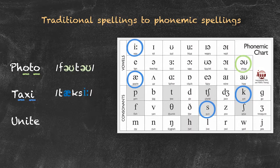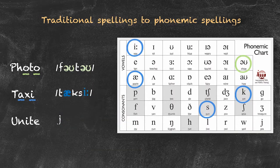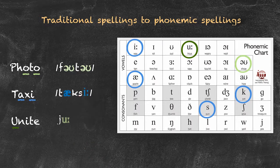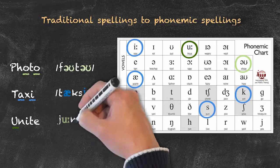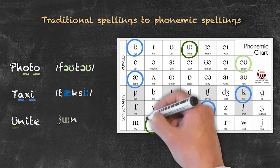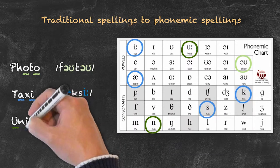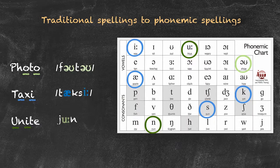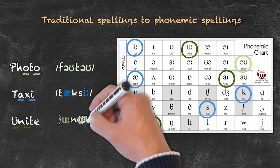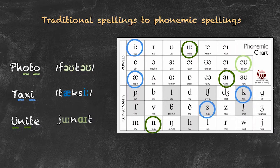Now we have 'unite.' As mentioned previously, there's a slight 'y' sound at the beginning, so we begin it with our 'y' phoneme. And then we continue on with 'u.' Then 'n,' the 'n' phoneme. And then we have our vowel 'i,' as in 'by.' And our final 't' sound. Unite.